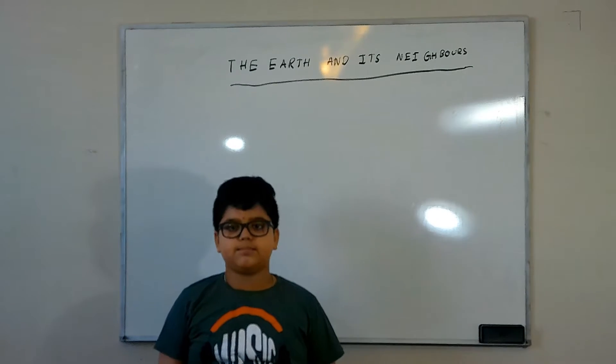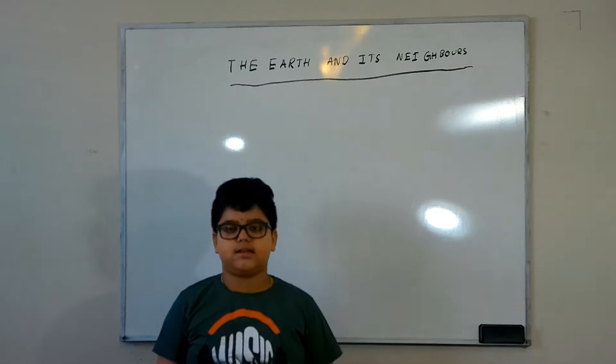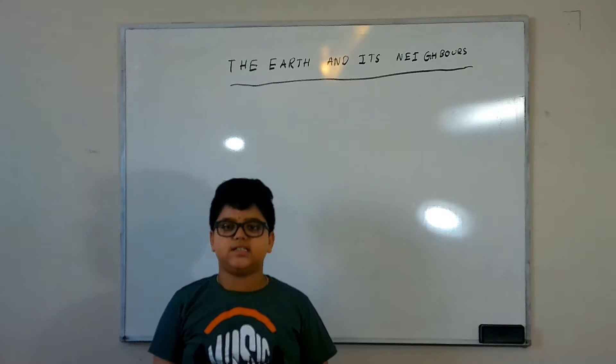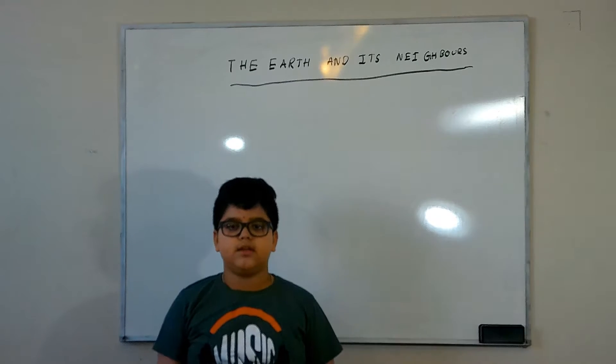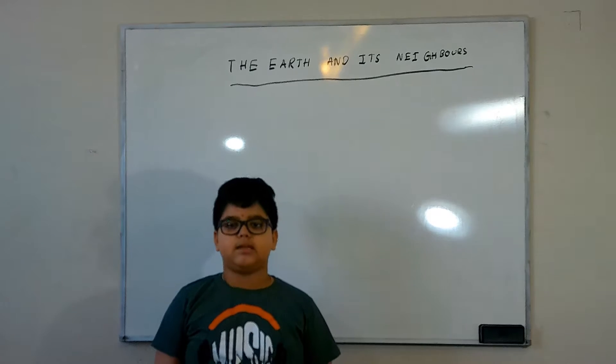Earth is one of the eight planets of the family of the Sun. The family of the Sun is known as the solar system. The Sun is head of the solar system around which all other members of the solar system take rounds.